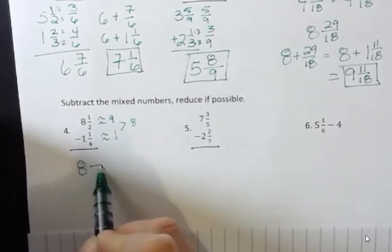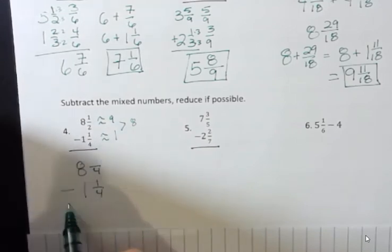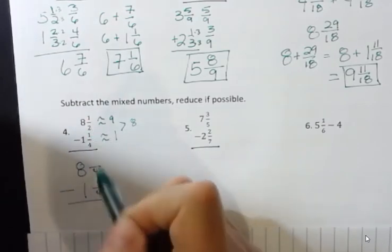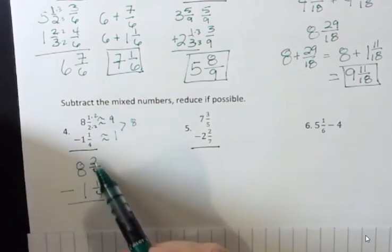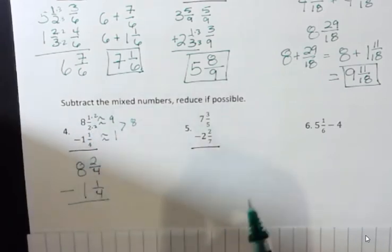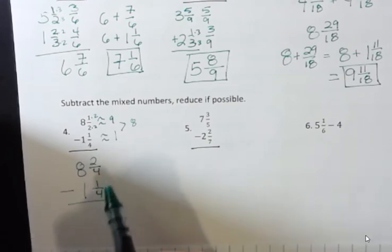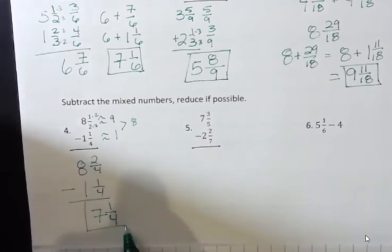So I'm going to rewrite this with fourths. And I'm going to write this one exactly as it is. And so what do I have to do to get four down here? I have to multiply by two. So I have to multiply by two up here. Notice two-fourths is equivalent to one-half. Once I have those written that way, I can just subtract. Two minus one is one. I keep the denominator the same. Eight minus one is seven. And so I got seven and one-fourth for my final answer.